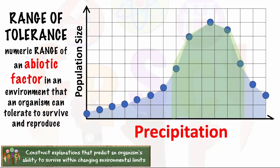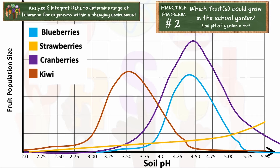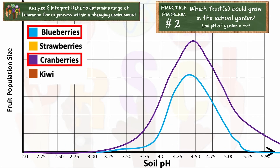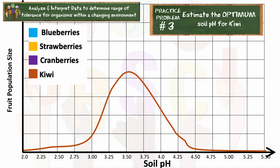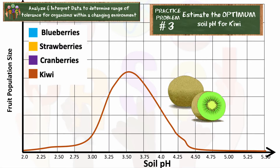What fruit could you all grow in your garden? It looks like cranberries and blueberries — their range of tolerance is between 4 and 5 as well. You're absolutely right. So what would be the optimum soil pH if you wanted to grow kiwi? You mean like the best pH? Great context clues. Yes, the optimum value would be the estimated value where the population thrived the best.